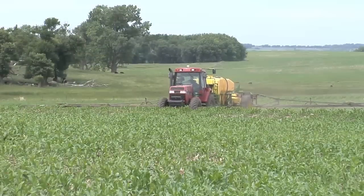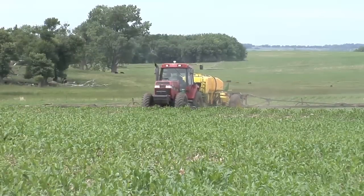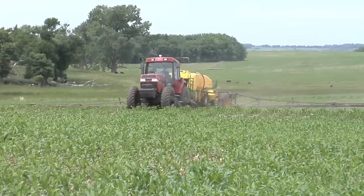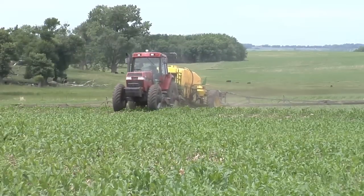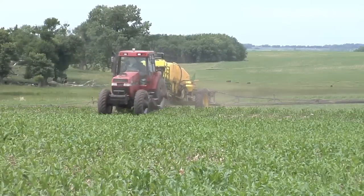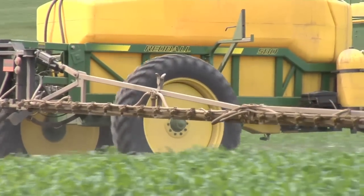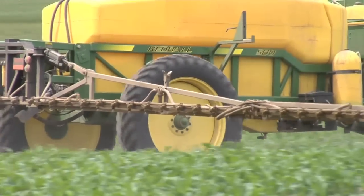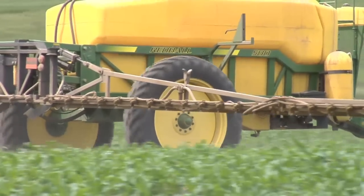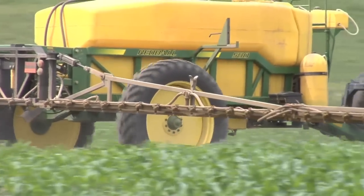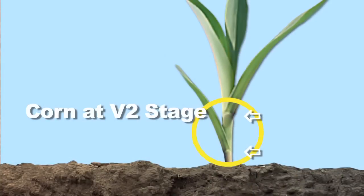Regardless of whether a farmer cuts the rate down to 10% of the normal use rate, it doesn't make any difference. The point is, once he gets past that V5 or fifth collar stage, he can no longer spray Banvel. This is why it's so important for every farmer to know how to count leaf stages and how to count them correctly.